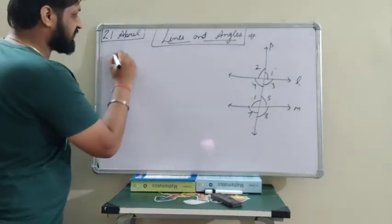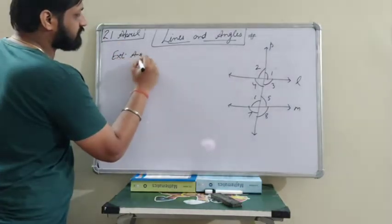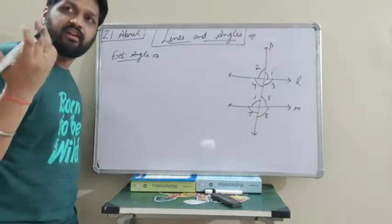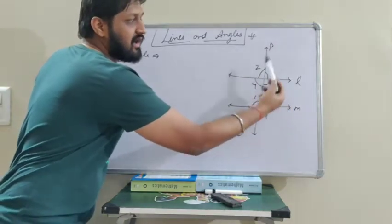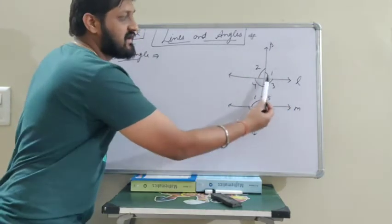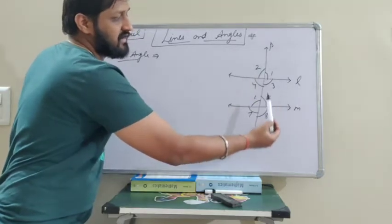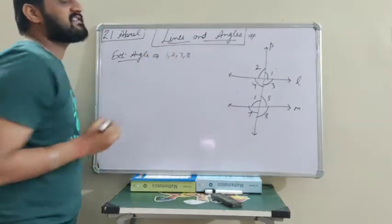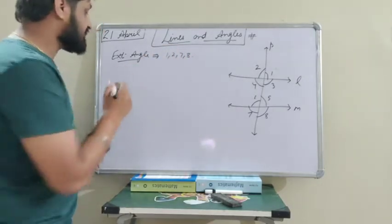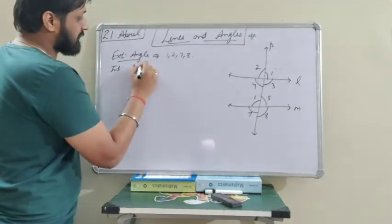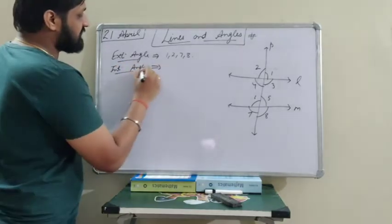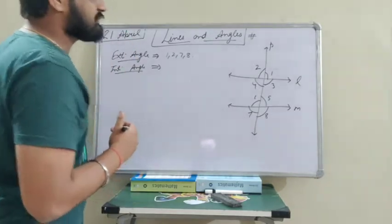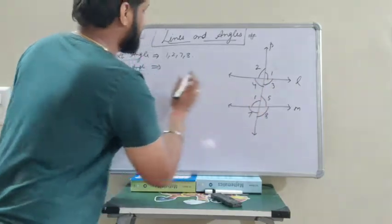Now, exterior angle — the angle that is outside, the outer angles clearly visible away from the lines — those are line numbers 1, 2, 7, and 8. These are the exterior angles. Interior angles means the angles which are inside or in the interior of the line segment, that is clearly angles 3, 4, 5, and 6. These are the interior angles.